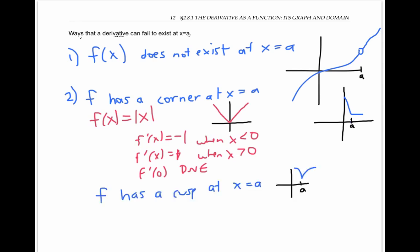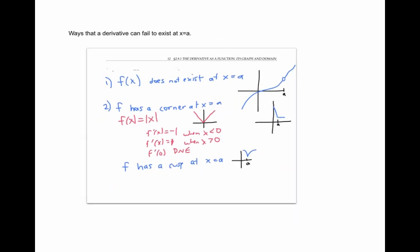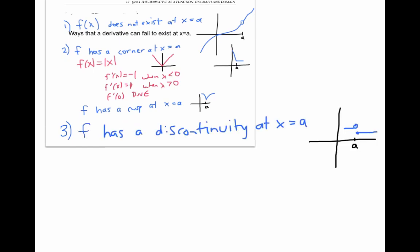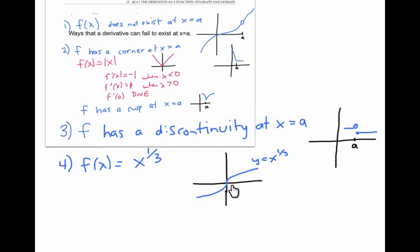A function with a cusp also fails to have a derivative at the cusp. We also saw that f can fail to have a derivative at a discontinuity. But there's another way that a derivative can fail to exist, even when f has no cusp, corner, or discontinuity. Let's look at the function f of x equals x to the one third. What's going on at x equals zero? At that instant, the tangent line is vertical, with a slope that's infinite or undefined. So the limit of the slopes of the secant lines will fail to exist because it'll be infinite.